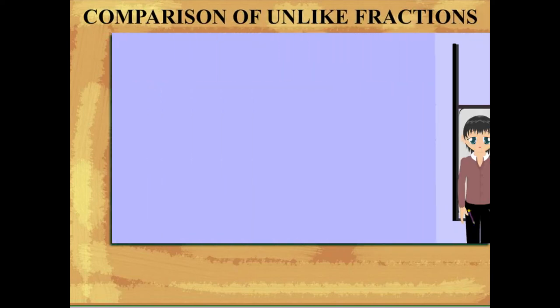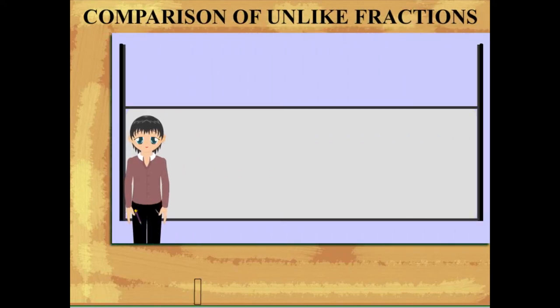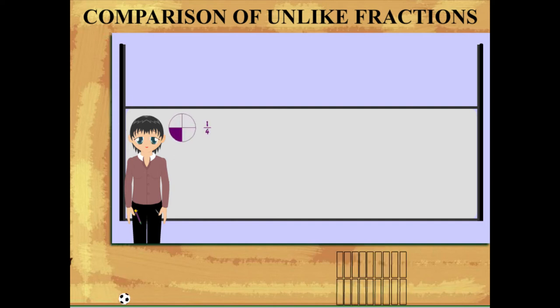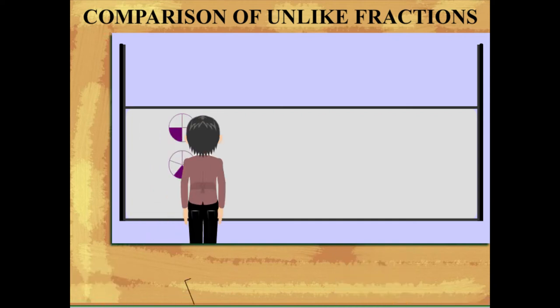Teacher Nancy introduces the comparison of unlike fractions. One shaded part out of four parts of a circle represents one-fourth. One part out of five parts represents one-fifth.